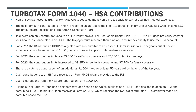Contributions for HSAs are not itemized deductions; they're deductions in arriving at your AGI. That makes them more preferable than a simple medical expense that would otherwise just be deducted as an itemized deduction. The contribution amounts are reported on Form 8889 and then ultimately flow through to Schedule 1, Part 2.